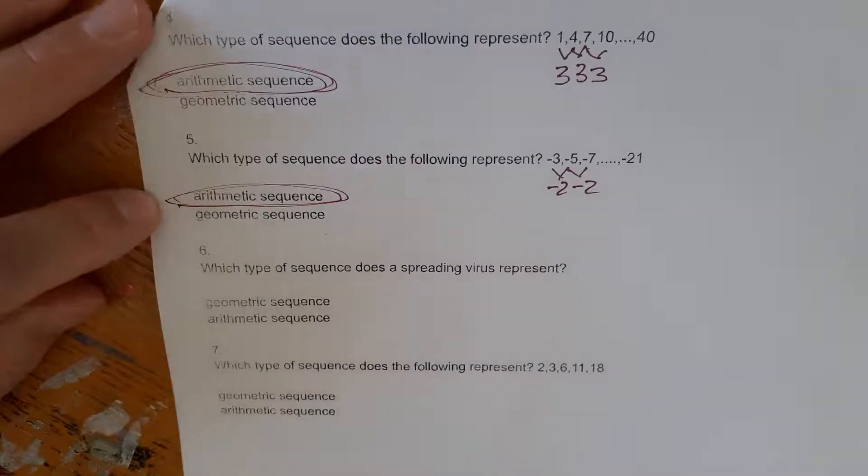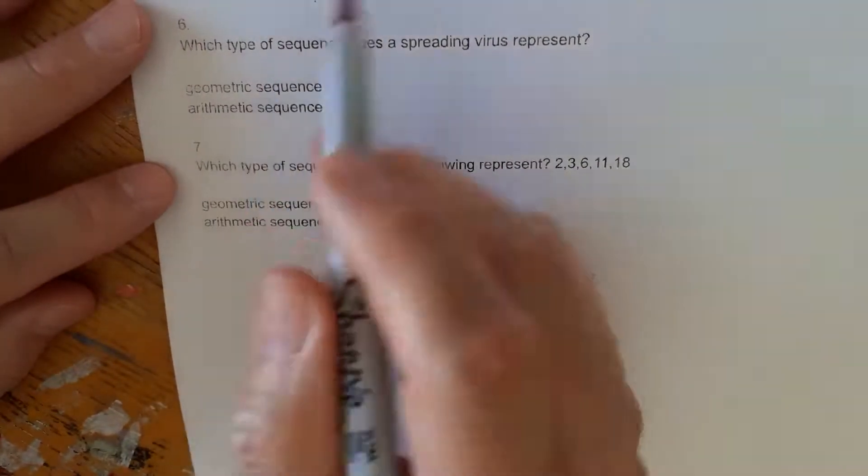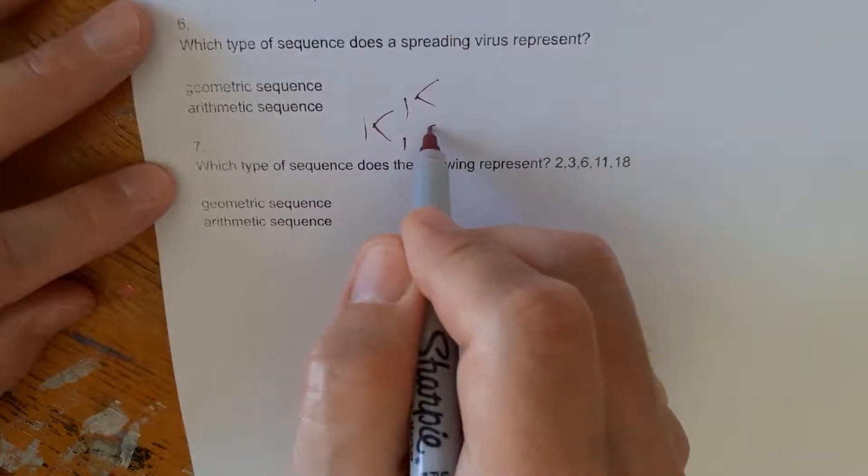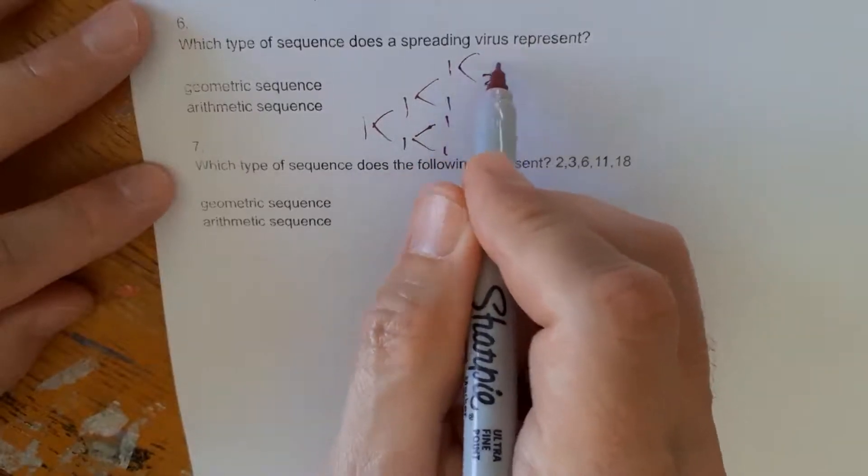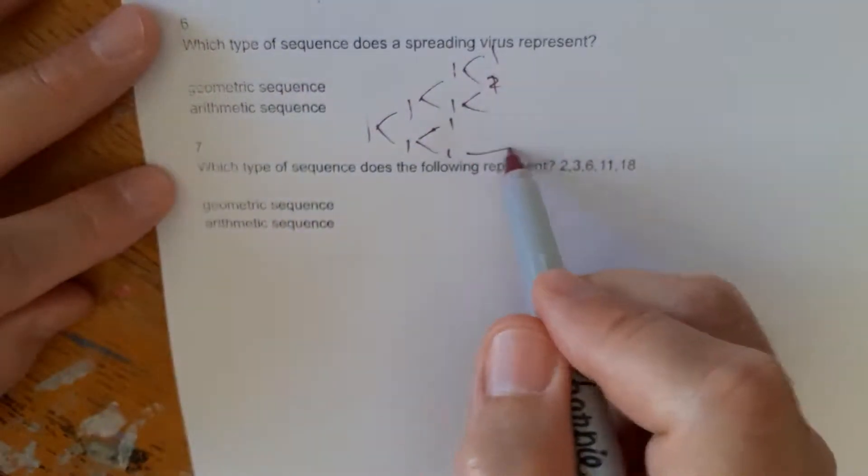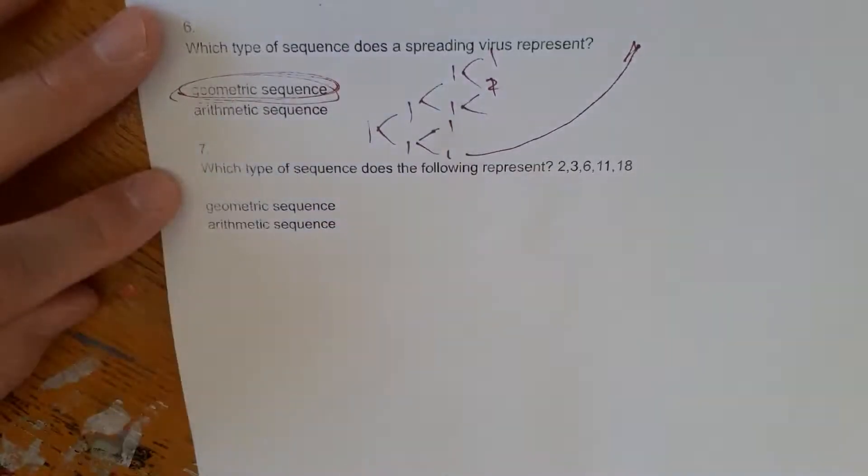So which type of sequence does the spread of a virus represent? This is where one person gets too sick, right? And each one of these gets two more sick, right? And each one of these gets two more sick. And by the time we carry this out, this starts to expand in an ever-increasing graph like this. It starts to accelerate. That's a geometric sequence.